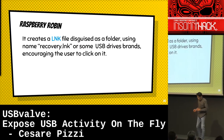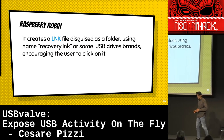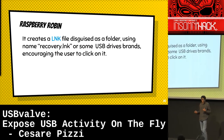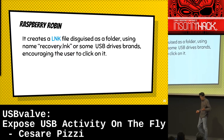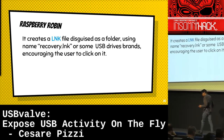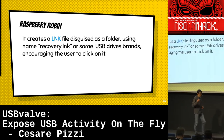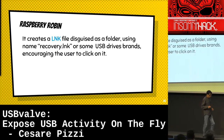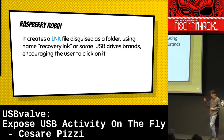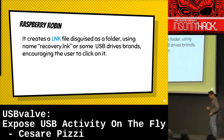Raspberry Robin uses a different technique: it creates a LNK file, which is a link file in Windows, disguised as a folder. It can use a name like Recovery, or USB drive brands like Samsung or Verbatim. In this way it can trick you into double-clicking on it thinking it's a folder, because it has a folder icon.